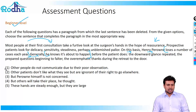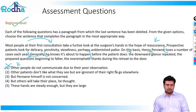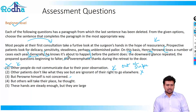The last line should give a conclusion about how Henry Perron would feel, or end the paragraph without adding too much additional detail. Option one says 'other people do not communicate due to poor reasons' — you're assuming some people do, which is not given, so that's eliminated. Option two says 'other patients don't like what they see but are ignorant of their rights to go elsewhere' — 'rights to go elsewhere' is out of scope, so that's gone. Option three, 'but Perron himself is not concerned,' could be an answer because he already knows it's about to happen. Let's park it.